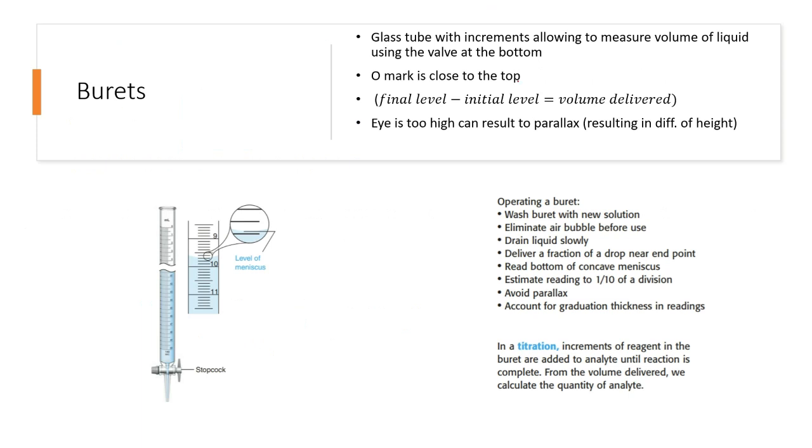Buret - it's a glass tube with increments allowing to measure volume of liquid using the valve at the bottom. This valve is also known as a stopcock. Unlike typical forms of volume equipment where zero is typically at the bottom, this one is bizarre because zero is on top, as shown right here.